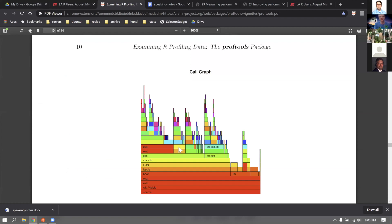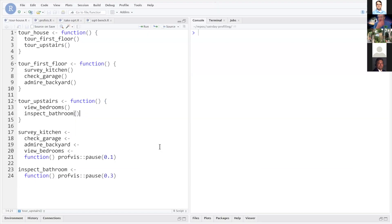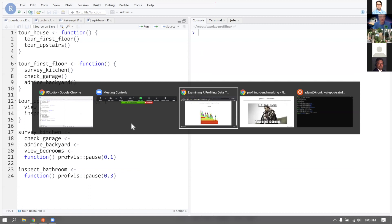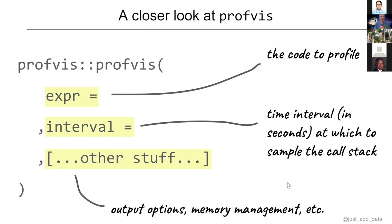Sorry you couldn't see that earlier — that was the visual of the proftools package I was trying to show, with the peaks and valleys. That's a graph that might come out of Luke Tierney's proftools package. Let me show you the profvis arguments again. So at a high level: you have an expression, which is your code to profile — usually just passing it a function — and then you have the time interval, and then a bunch of other options.